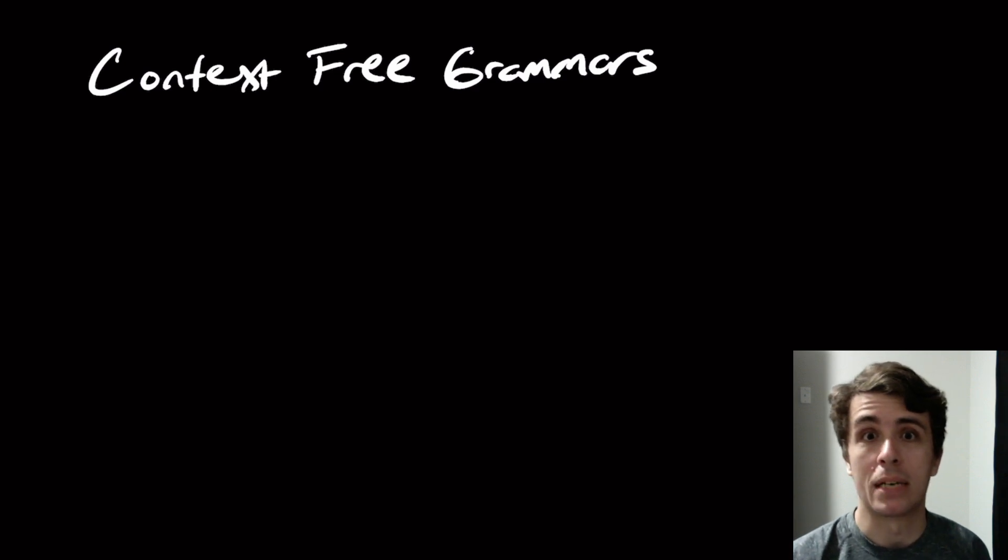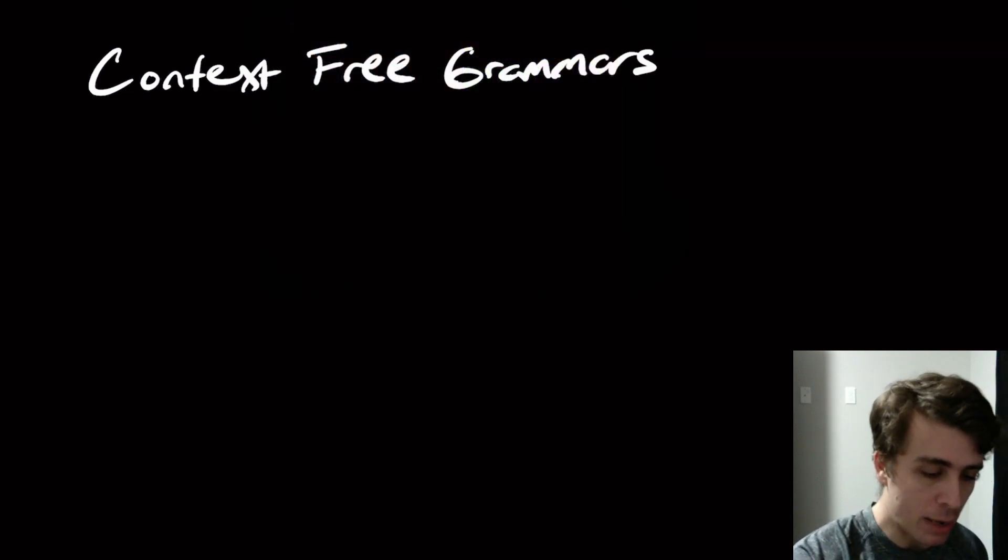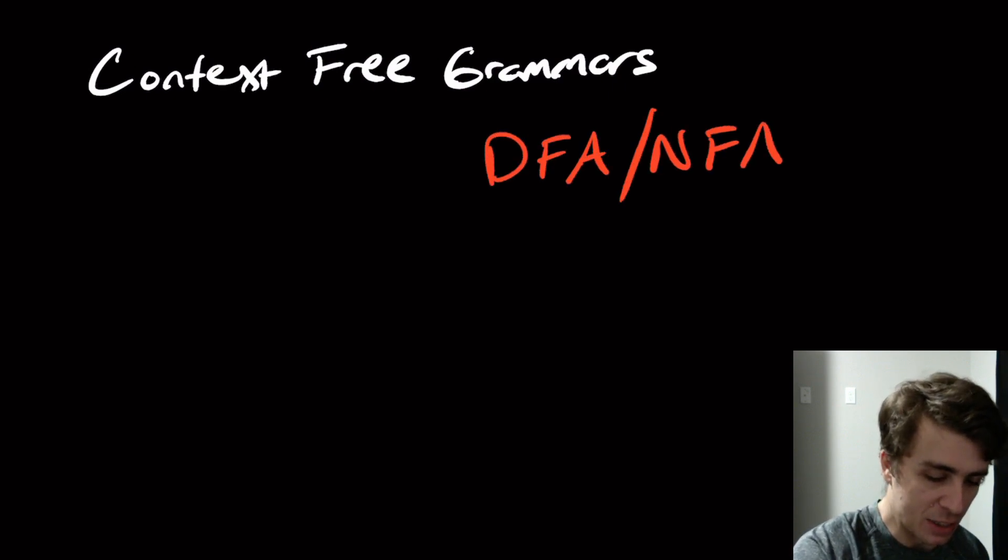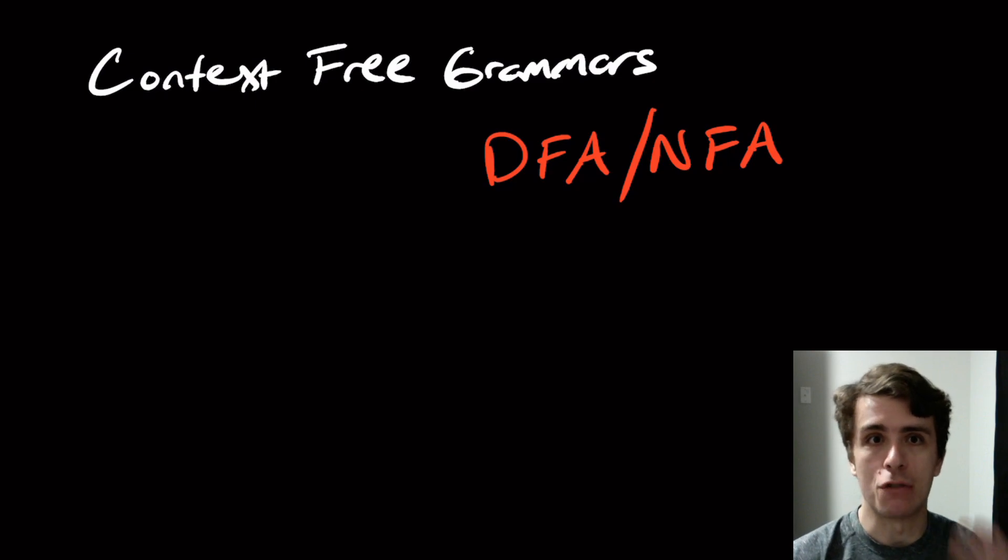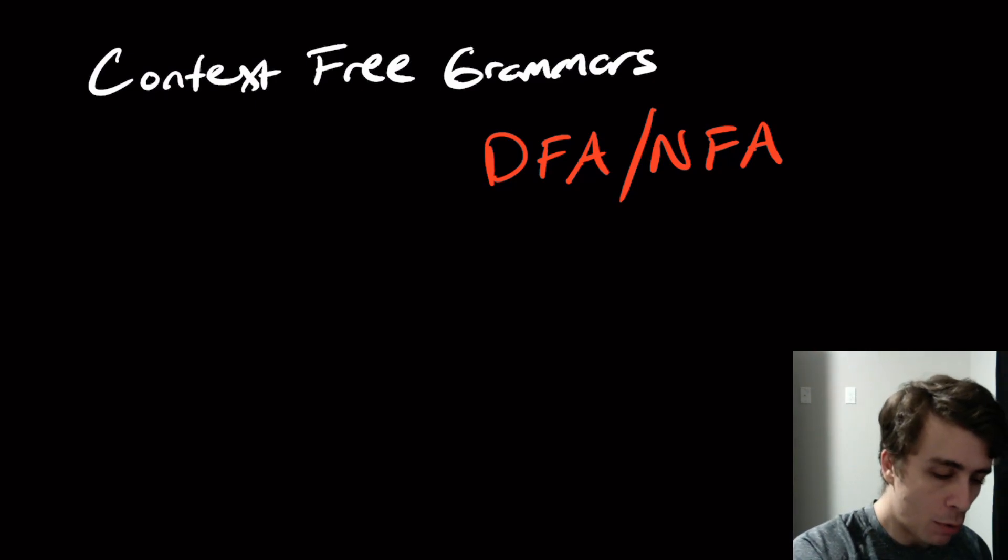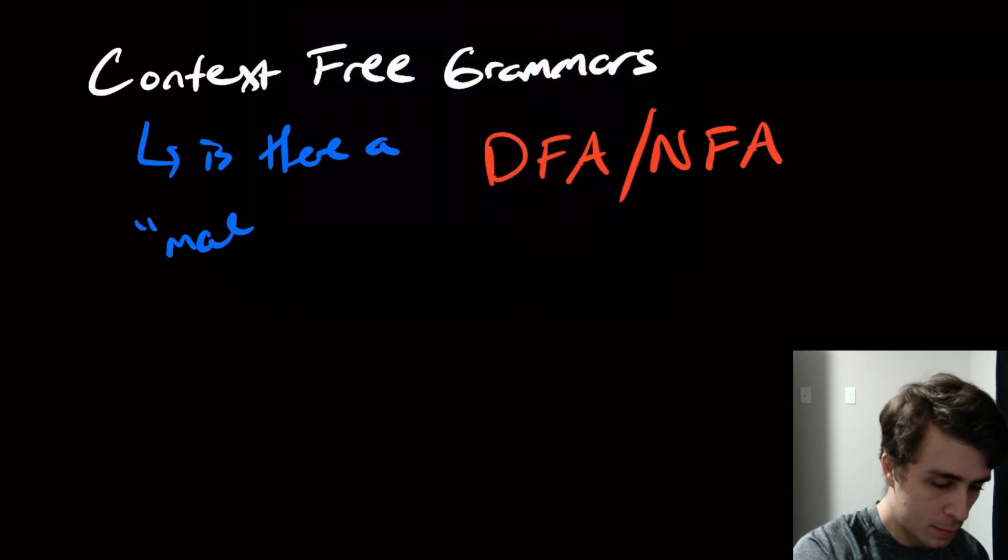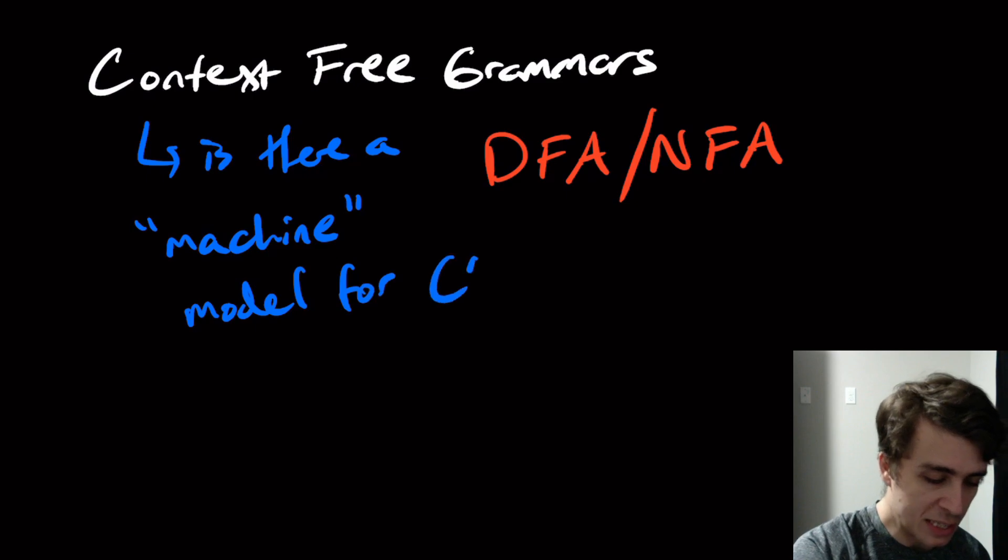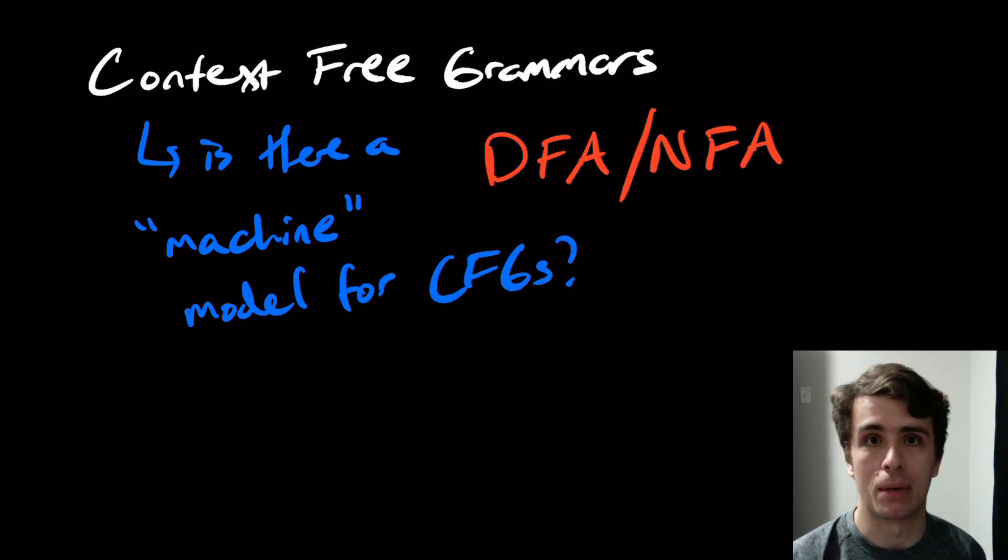What we've been talking about are these things called context-free grammars. They are a model of computation that allow us to generate a string by applying rules over and over from a start variable. But when we talked about the regular languages we had these DFA, NFA things, right? Which are machine models that you feed a string into and it says yes or no on them. So what we would want to answer here is: is there a machine model for CFGs, or I guess equivalent to context-free grammars? That's what we're going to actually talk about today.